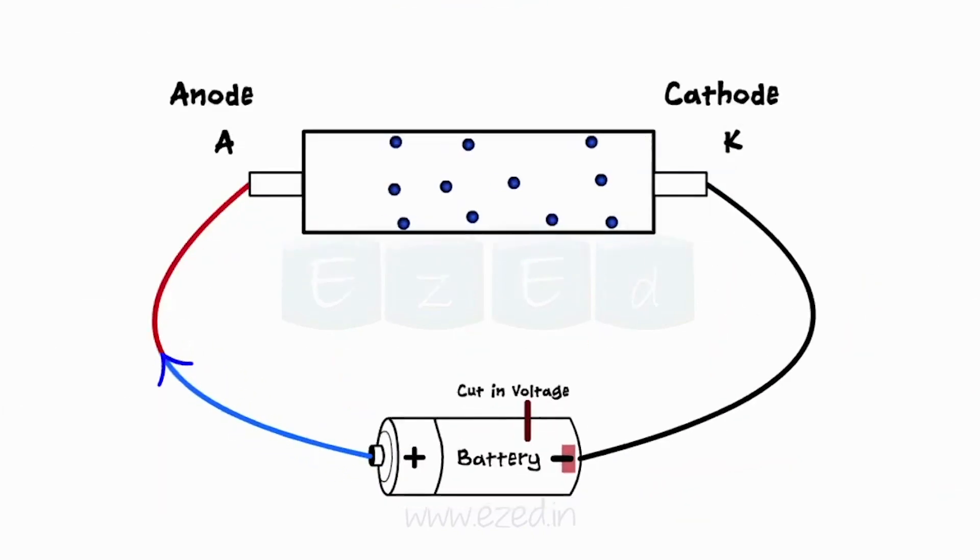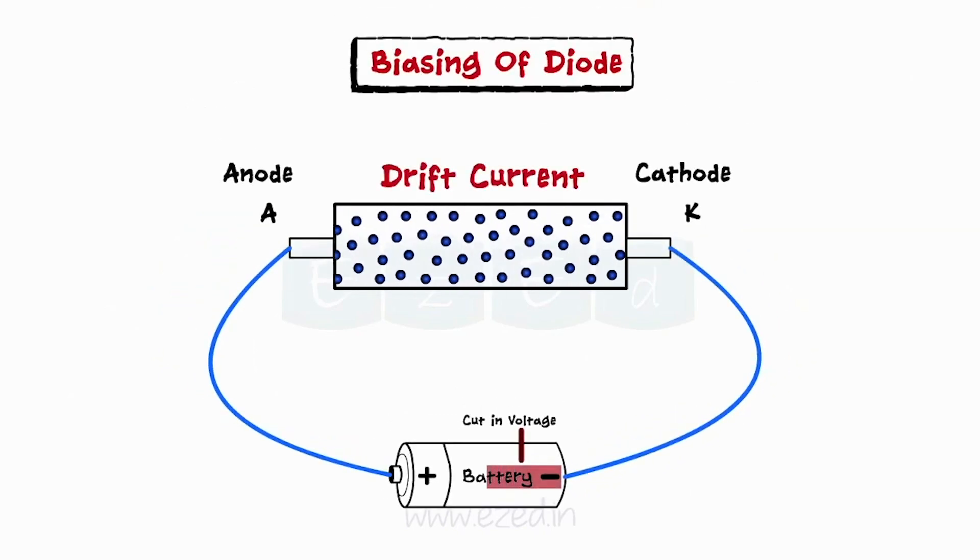Thus, electrons move from cathode to anode, setting up the flow of current from anode to cathode. This mode of operation is called forward bias and this current is called drift current.